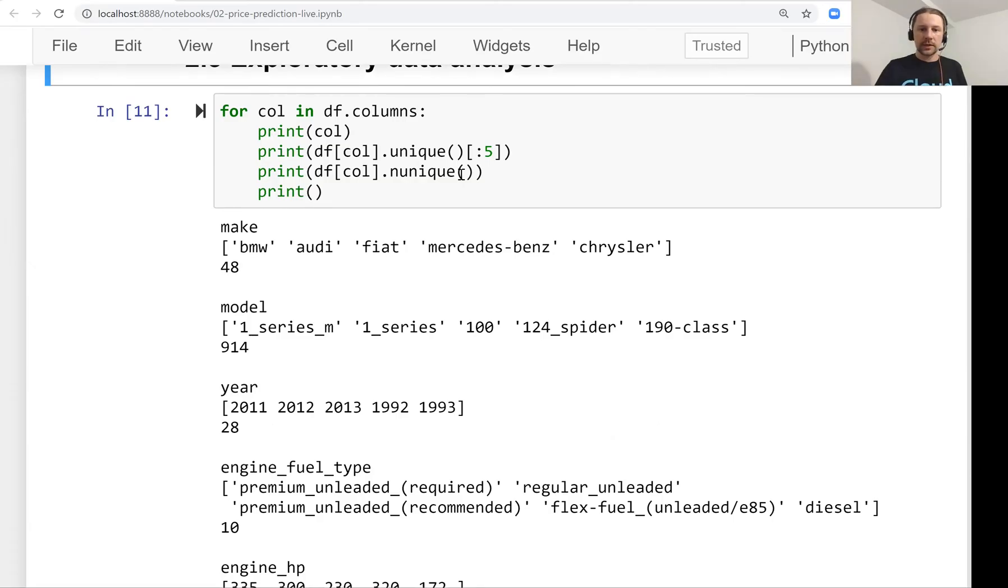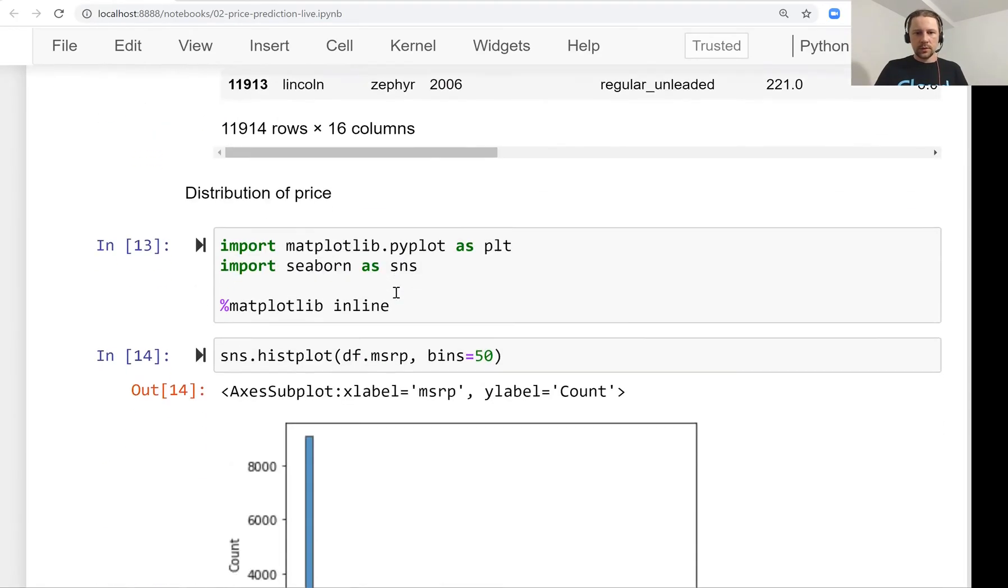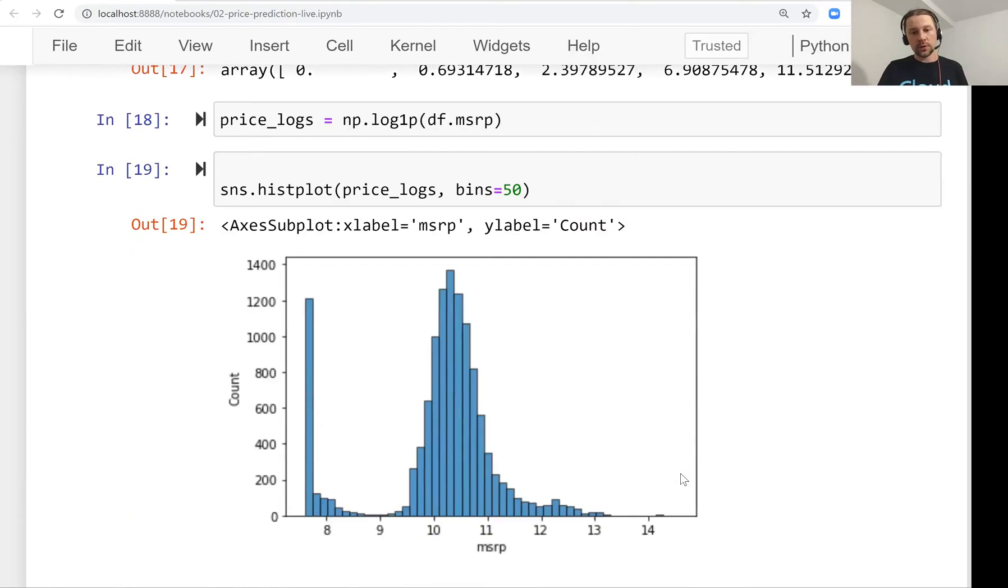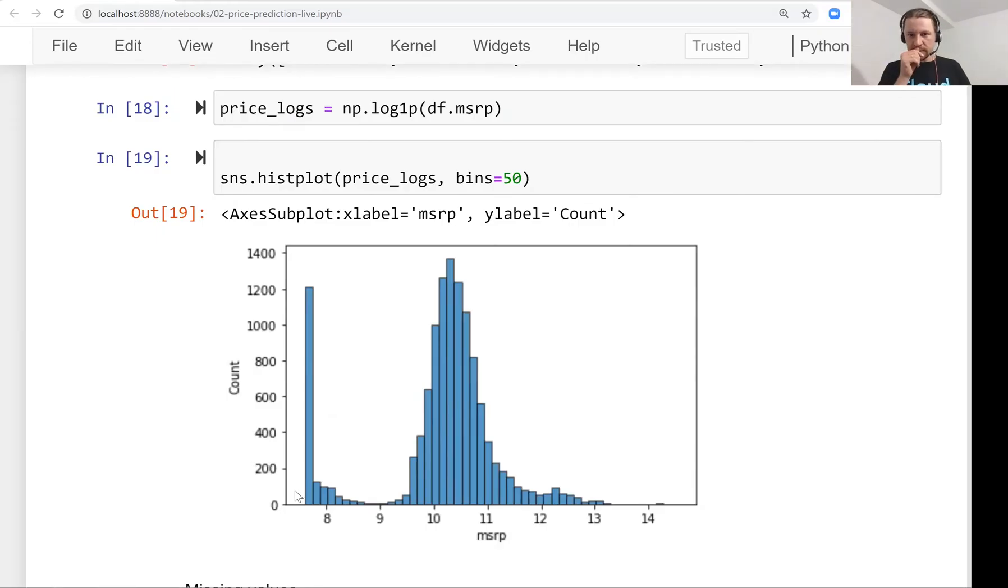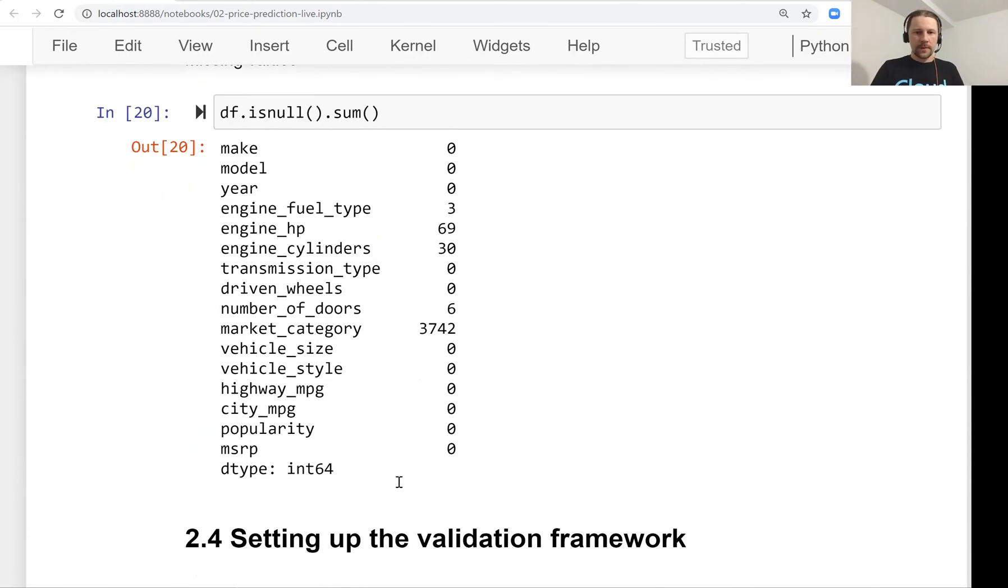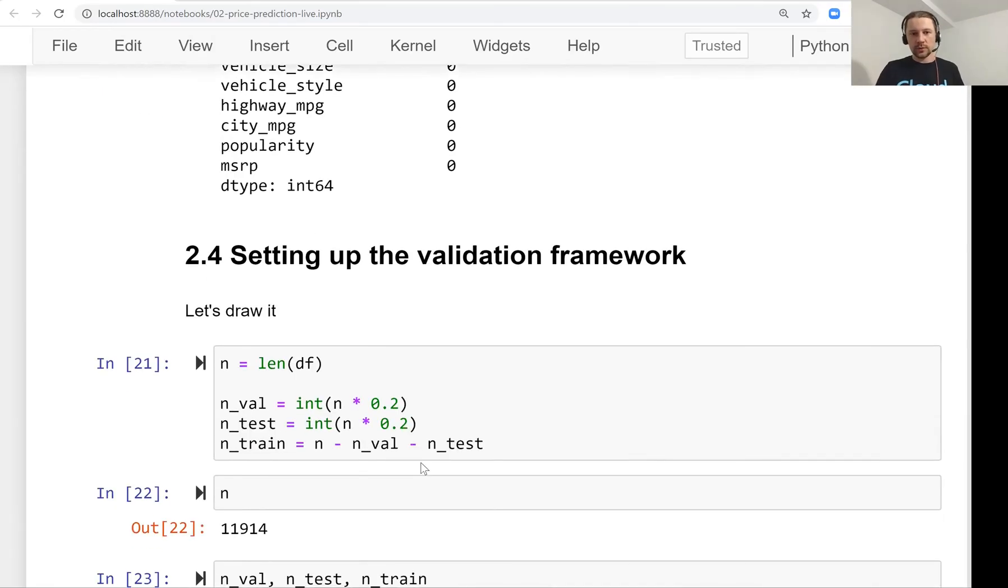Then we did exploratory data analysis and we identified that we have this long tail distribution of price. We removed the long tail by applying the logarithmic transformation to data. This is a good idea because with a long tail, when the distribution has a long tail, usually machine learning models have problems. There's also missing data, and we saw that with missing data we cannot really train a model, so we need to do something with this.